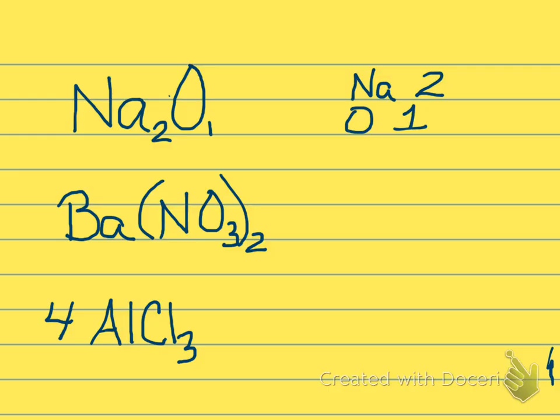So we add a little bit of difficulty to this. We have Ba(NO3)2. What these parentheses mean, and this subscript 2, is that there are two of everything inside the parentheses. So if we look at this compound, we have barium, we have nitrogen, and we have oxygen. There is no subscript after the barium, so we know that there's just one barium atom.